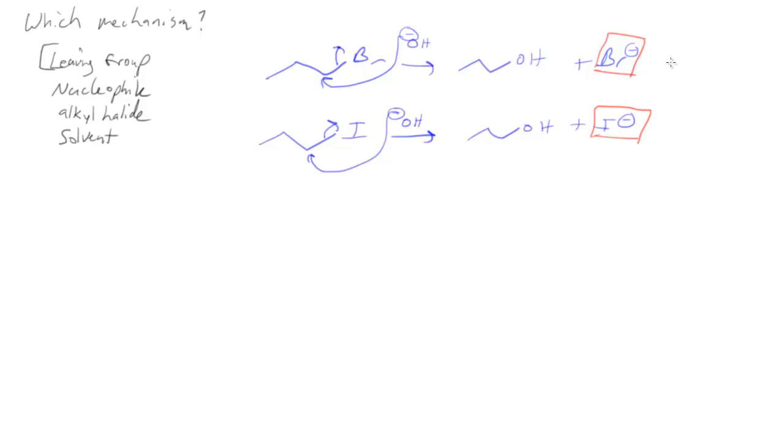And of course the stability of the leaving group is related to the pKa of their conjugate acids. So HBr has a pKa of about minus 9, HI has a pKa of about minus 10.